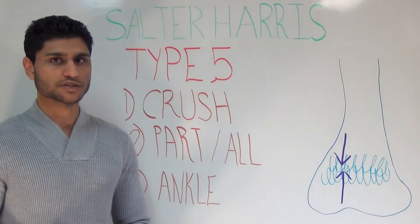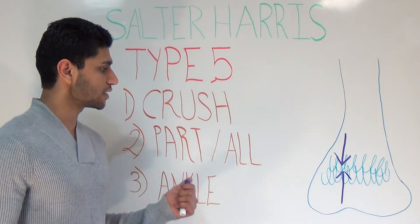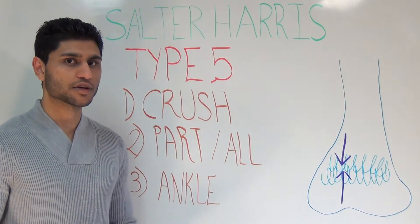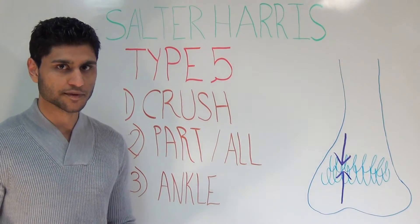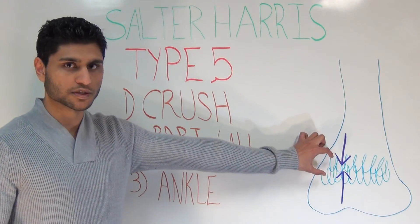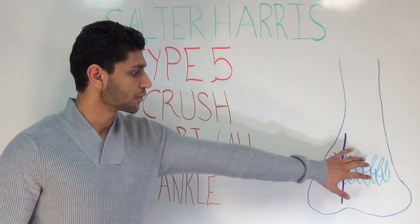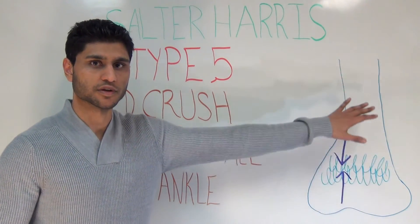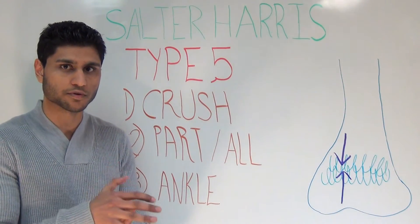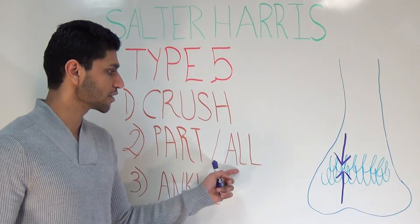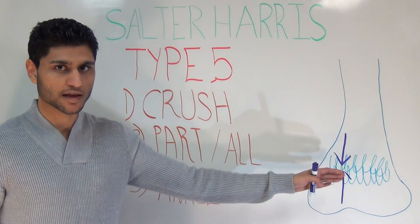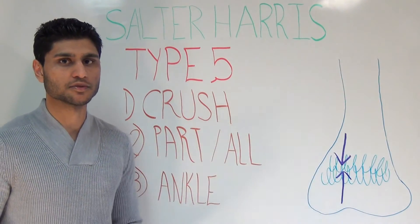Type 5 is a crush injury to the growth plate. The epiphysis and the metaphysis are not injured. It could be a partial or complete compression. If only one part of the growth plate was compressed, the other part remains open and will continue to grow, so the child will develop an angular or bowing deformity of that bone. If it's a complete compression, the bone will possibly never grow again, and in the long term this can lead to a limb length inequality.